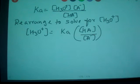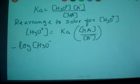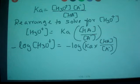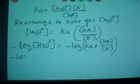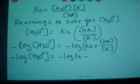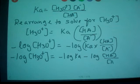We can take negative logarithm for both sides. When you do that, you can see negative log H3O plus concentration is minus log Ka minus log HA concentration divided by A minus concentration.